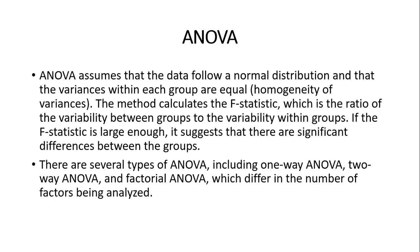ANOVA assumes that data follow a normal distribution — बिلकुल वैसे ही जैसे t-test की assumptions थीं। इसमें normal distribution और equal variances assume किए जाते हैं। T-test में T-distribution देखते हैं, F-test में F-distribution और F-statistic use किया जाता है। F statistic is the ratio of the variability between groups to the variability within groups. If the F value is large enough, it suggests significant differences between the groups.